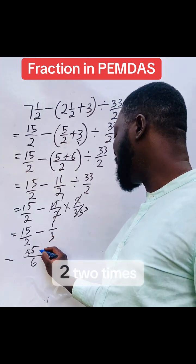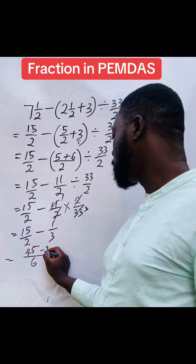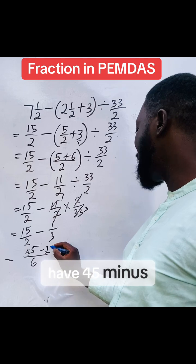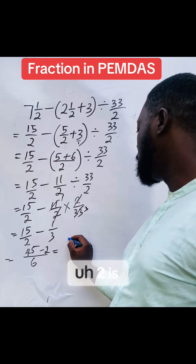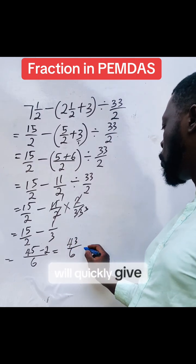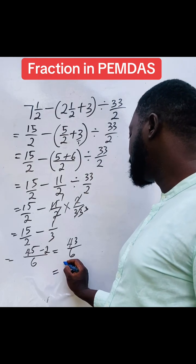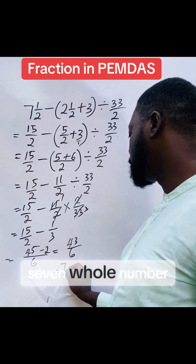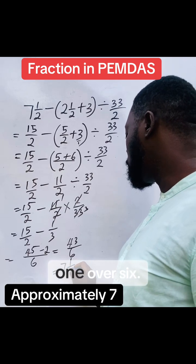So here is 2, 2 times 1, you have 2. So quickly, you can now have 45 minus 2 is 43 over 6. So this one will quickly give us 42, that is 7 whole number 1 over 6.